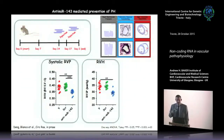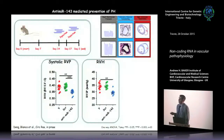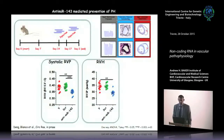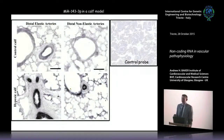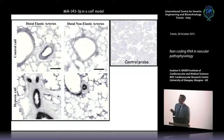We not only prevented pulmonary hypertension by pre-injecting miR-143 anti-mir but also reversed it: exposing mice to hypoxia for 14 days before injecting anti-mir, then harvesting at day 21, we can reverse right ventricular systolic pressure and right ventricular hypertrophy. In a calf model with Kurt Stenmark in Denver — calves exposed to hypoxia for 14 days — miR-143 is highly expressed in remodeling vessels after hypoxia.